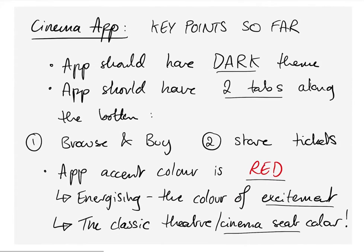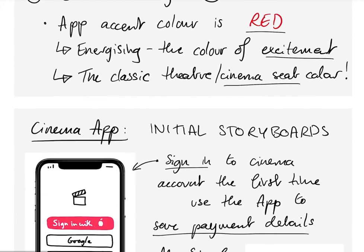Key points so far: the app should have a dark theme and two tabs along the bottom to browse and store tickets. I decided the best accent colour for buttons should be red — firstly because it's energising and the colour of excitement, but also because it's the classical theatre cinema seat colour. You always go into a theatre and it has a very dark atmosphere with red seats, and that's the style I was going for.